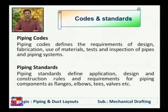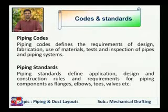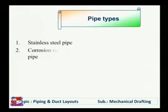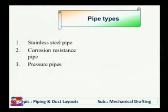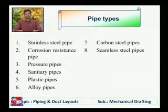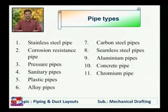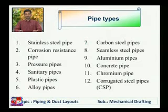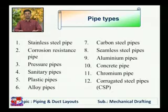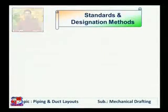We will discuss the methods of drawing various pipelines, their interpretation and how to use these codes and standards in drawings. Pipe types — how many types of pipes are available in the market? The first is stainless pipe, corrosion resistance pipe, pressure pipes, sanitary pipes, plastic pipes, alloy pipes, carbon steel pipes, seamless steel pipes, aluminium pipes, concrete pipes, chromium pipes, and corrugated steel pipes, also known as CSP. And many more, but mainly we will discuss about GI pipes and stainless steel pipes, which are widely used in industry.